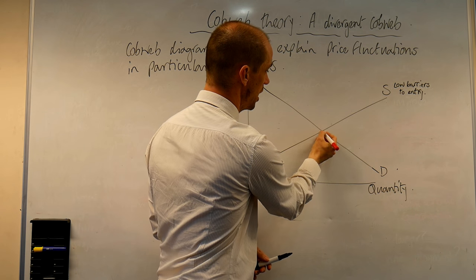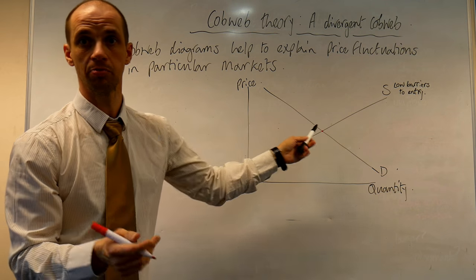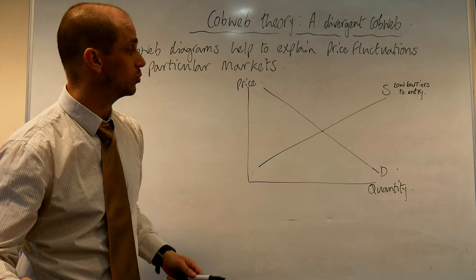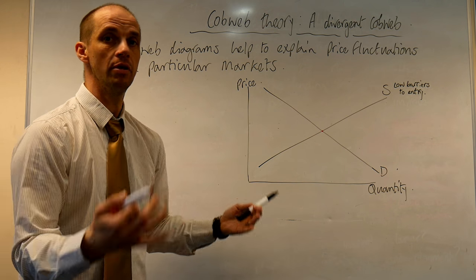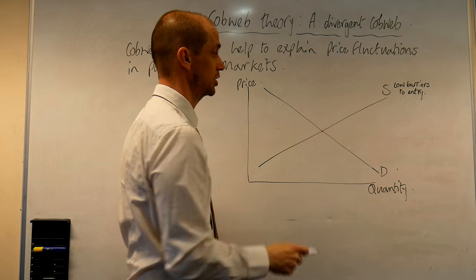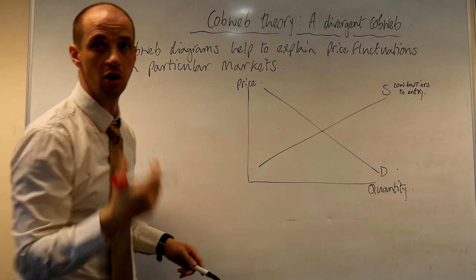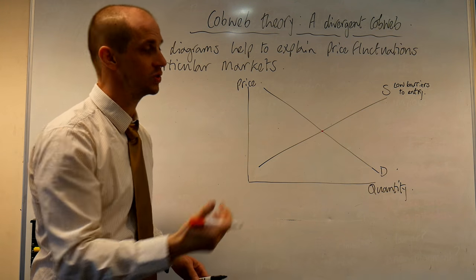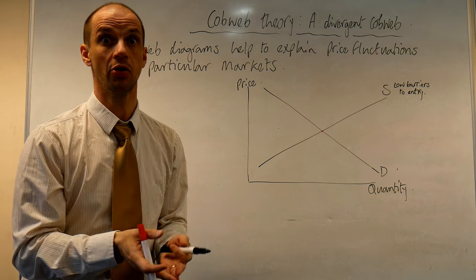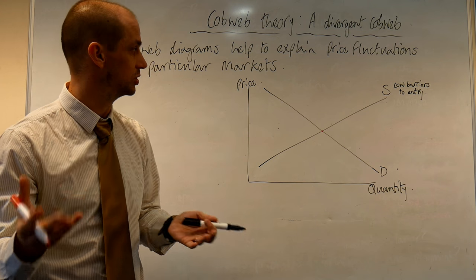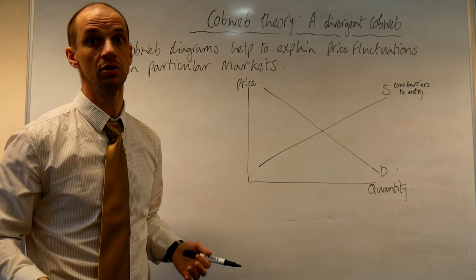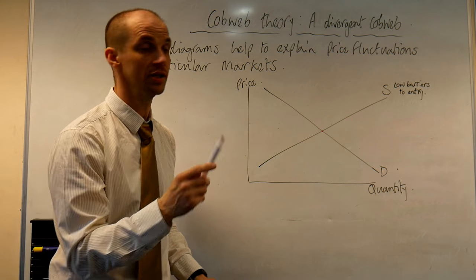We start off at what would be our equilibrium price where supply equals demand. But let's consider a scenario where we end up with a far better harvest. For whatever reason, the actual level of production is far in advance of the actual equilibrium. Now when it comes to harvesting your crops in six, eight, nine months time, the supply then becomes perfectly inelastic. In the longer term the supply curve is far more elastic because more farmers can actually enter that marketplace and produce more of that good.